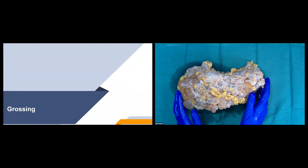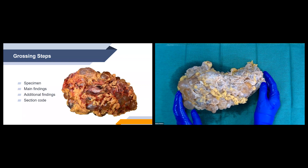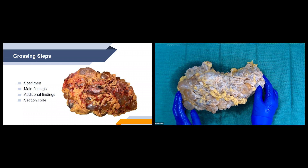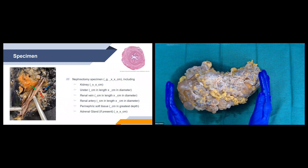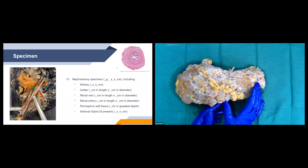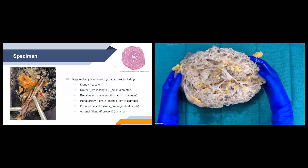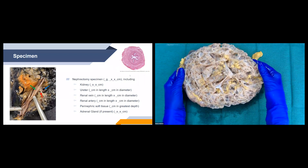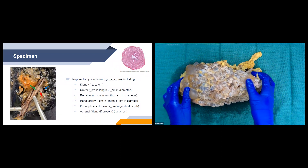Now we'll go through grossing. First, make sure patient identifiers are correct, then check clinical history to confirm the specimen is not out for malignancy. We'll describe the specimen, main findings, additional findings, and section code. For our nephrectomy specimen, we give an overall measurement and weight in three dimensions, then a separate measurement of just the kidney, followed by individual measurements of the ureter, renal vein, and renal artery.